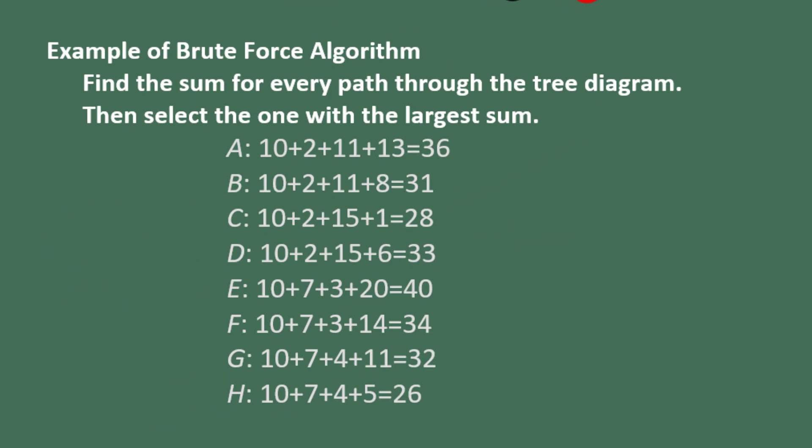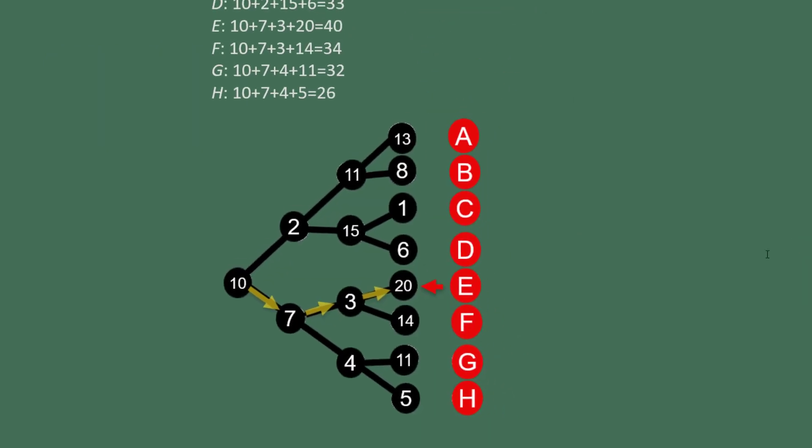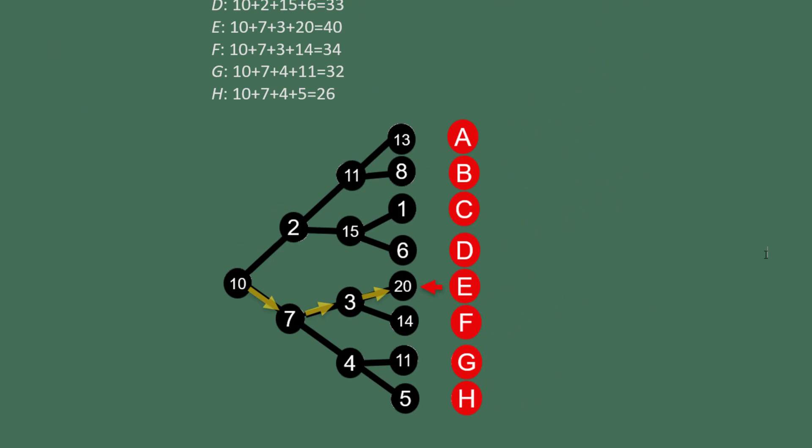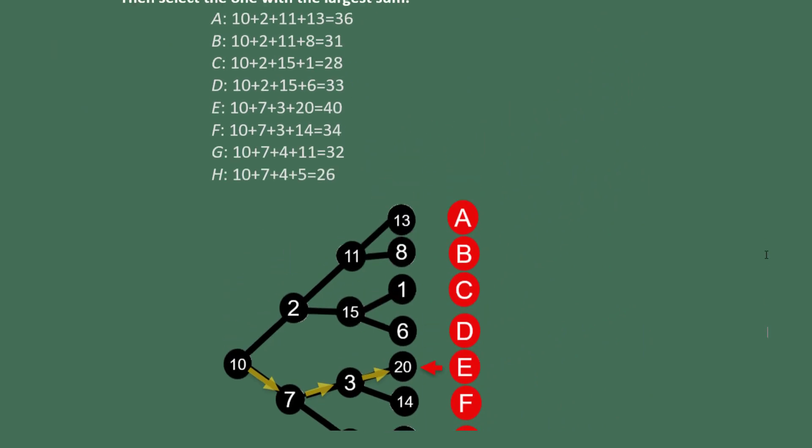Comparing the sums, we see that the largest value is 40, which is branch E. Branch E is the optimal solution, and there is only one optimal solution because no other branches have a sum of 40.